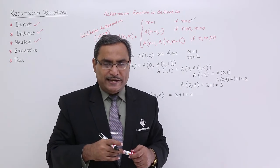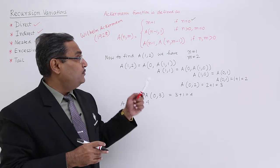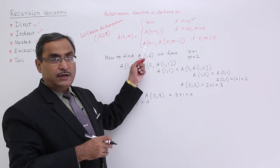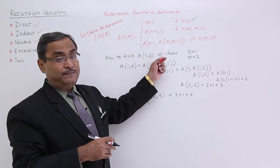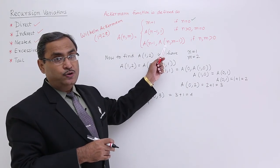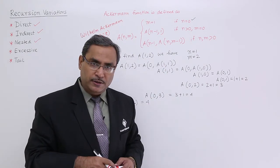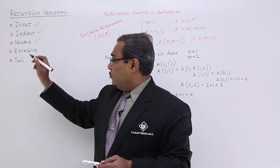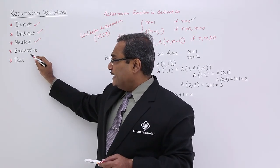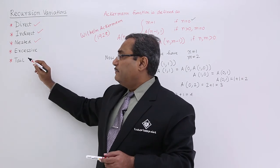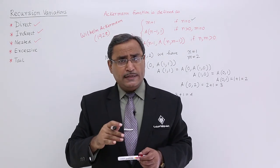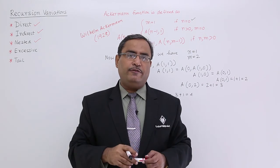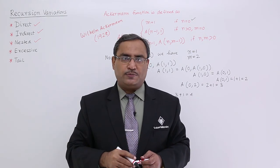In this way, this is known as nested recursion. This particular function call calls another function, and within that function, the function is called again to pass the second argument. In the next videos, we will be going for excessive and tail recursion. Please watch all of them as they are in continuation of this video. Thanks for watching.